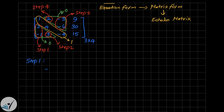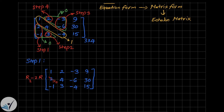I'm going to copy the matrix here. To transform this 2 to zero we replace the second row with R2 minus 2·R1, and to transform the -1 to zero we replace the third row with R3 + R1. This is the pivot operation — the first row remains unchanged. Let's go ahead and apply these operations.